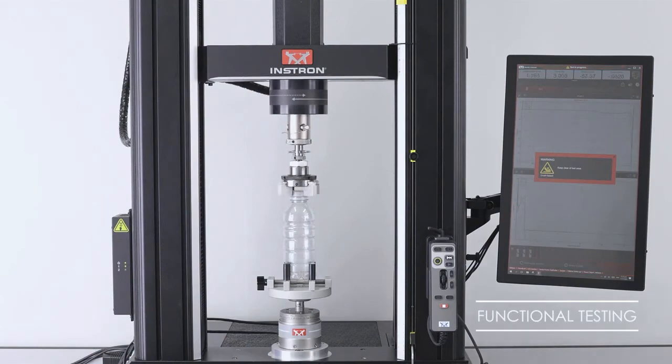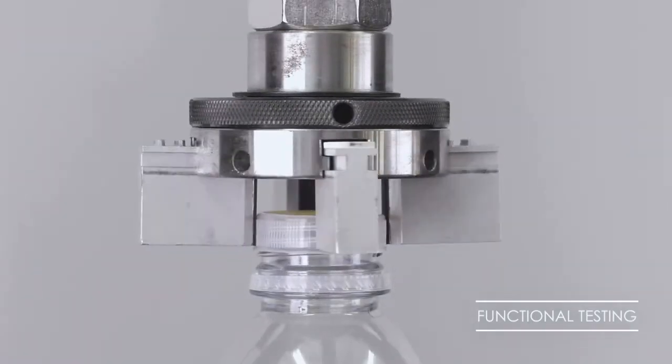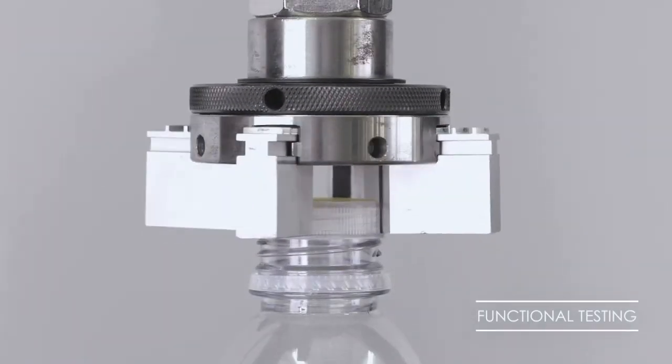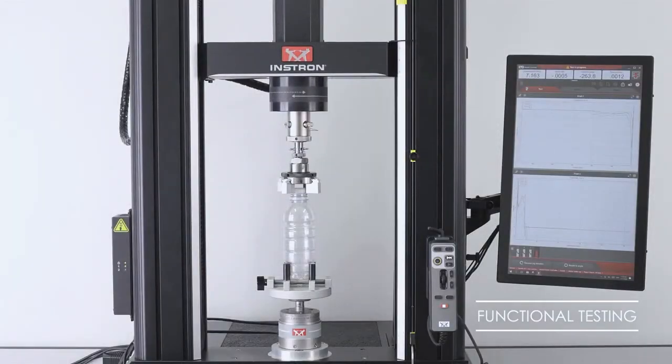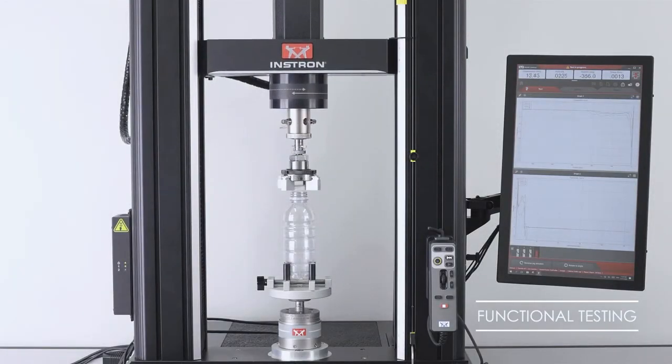Functional testing is performed on finished products such as bottle caps, medical implants, and steering columns to make sure the product performs well under the torsional loads it will encounter in use.